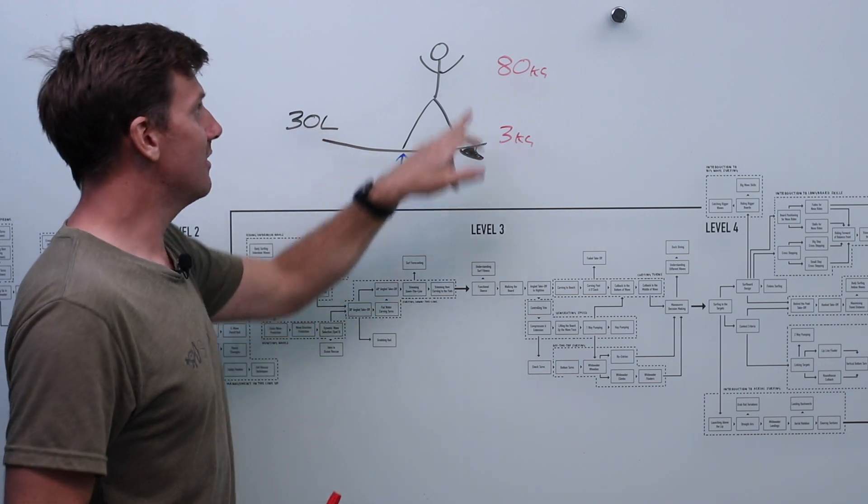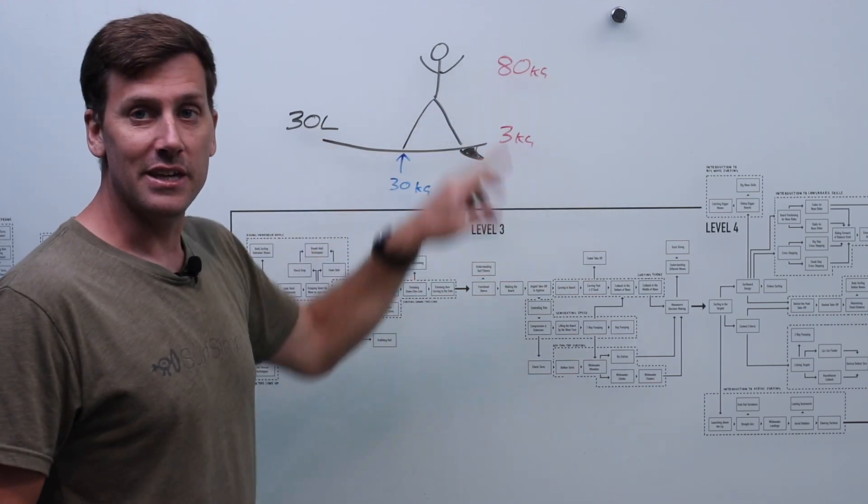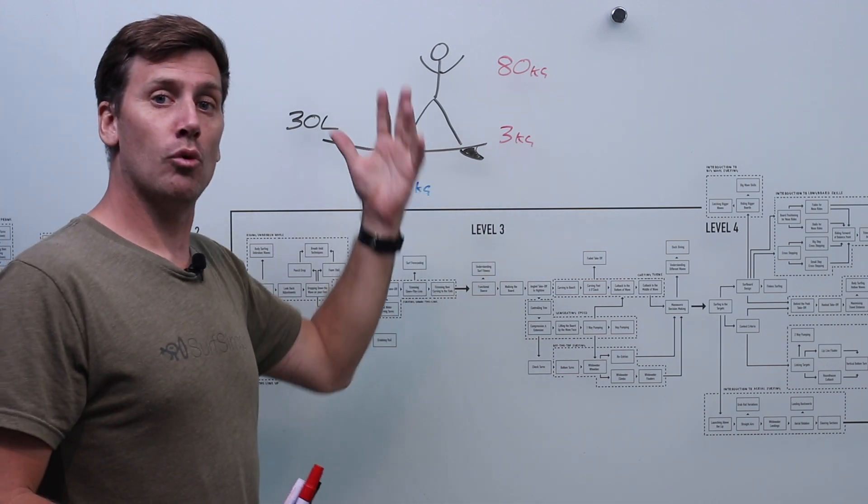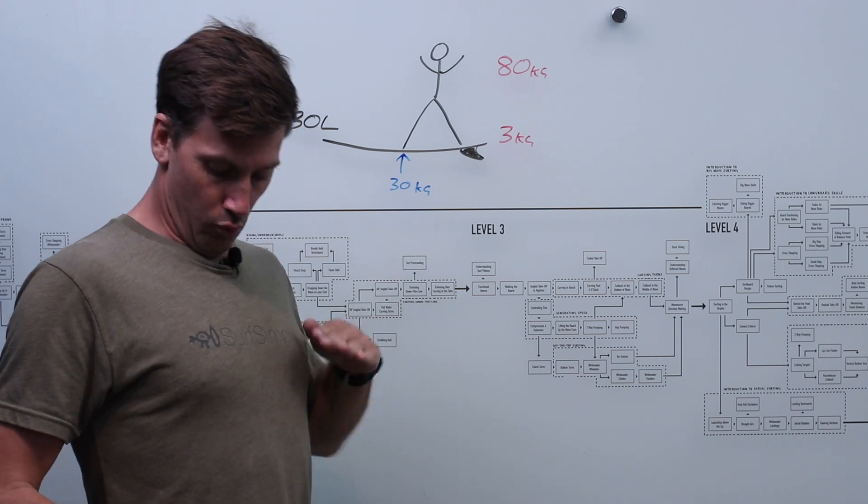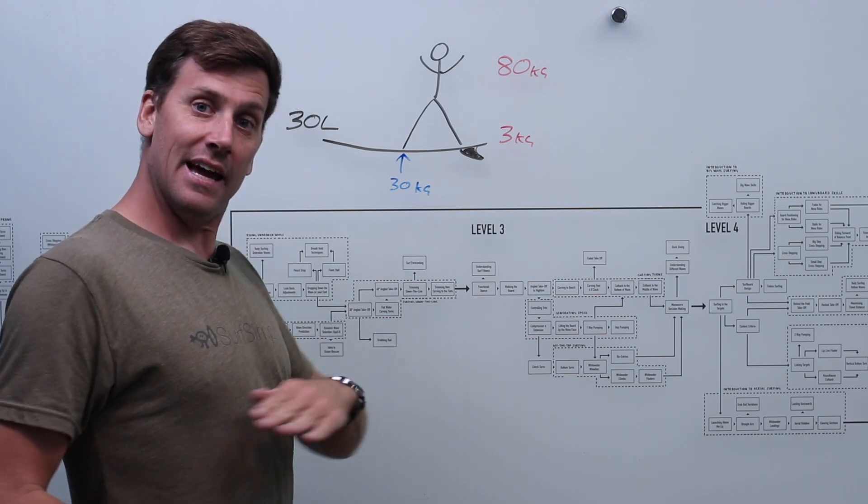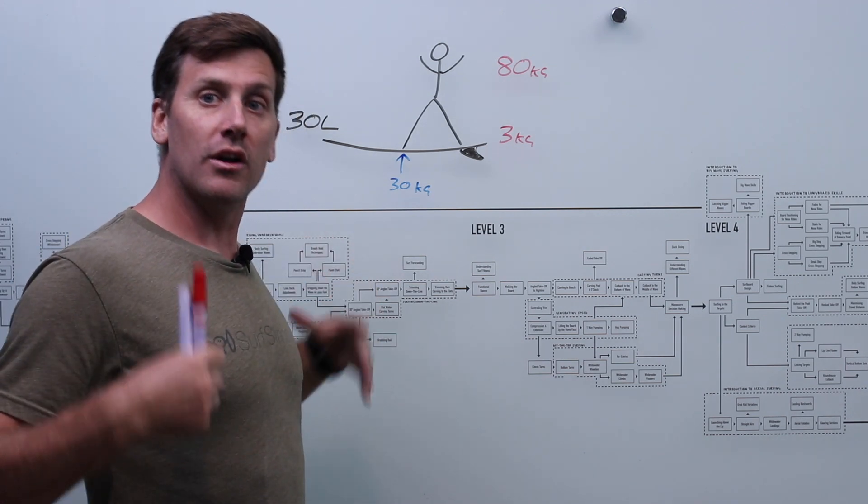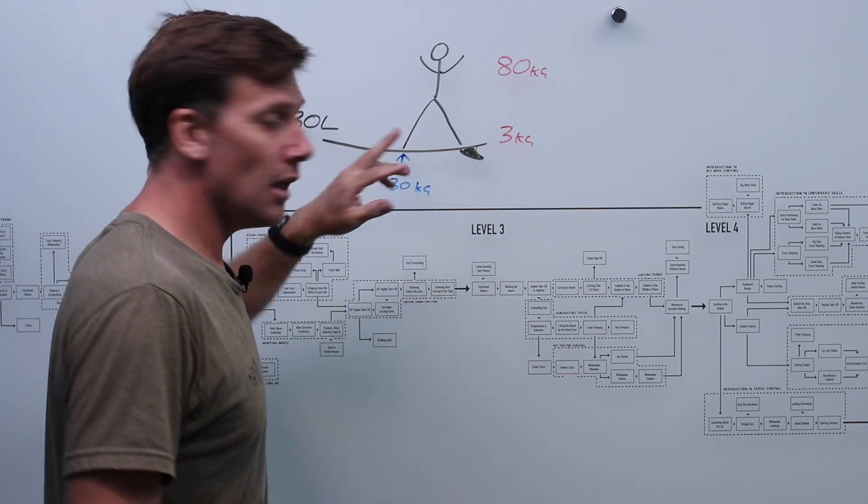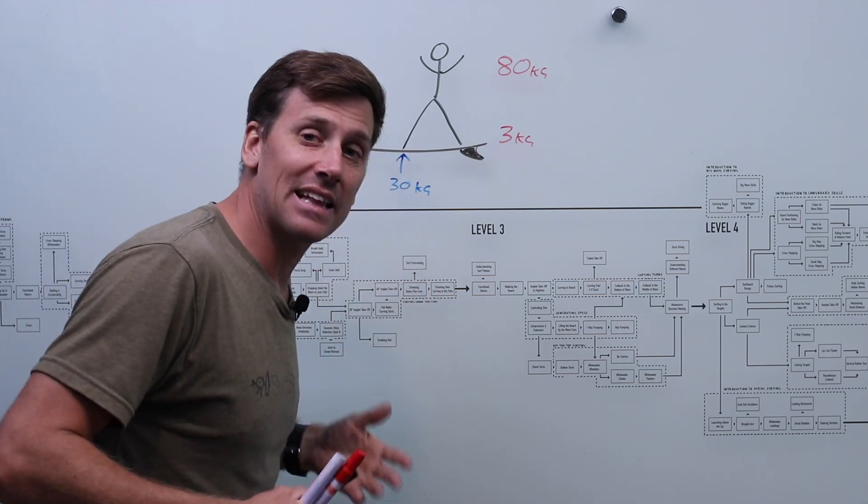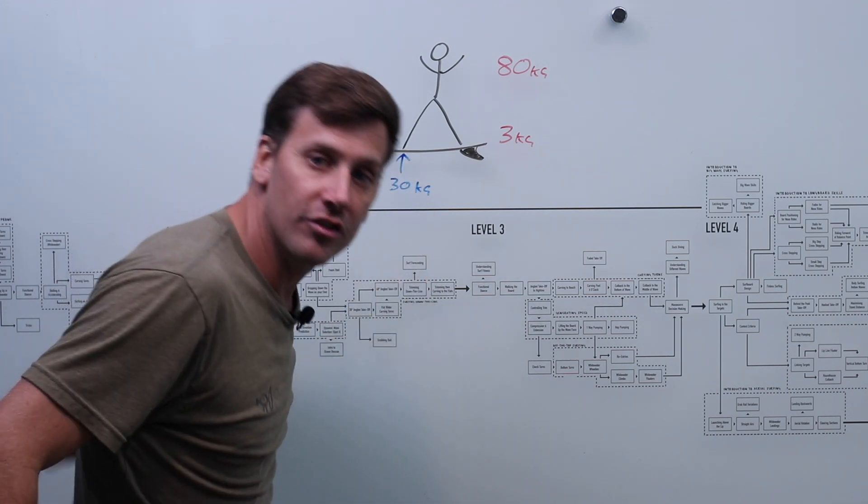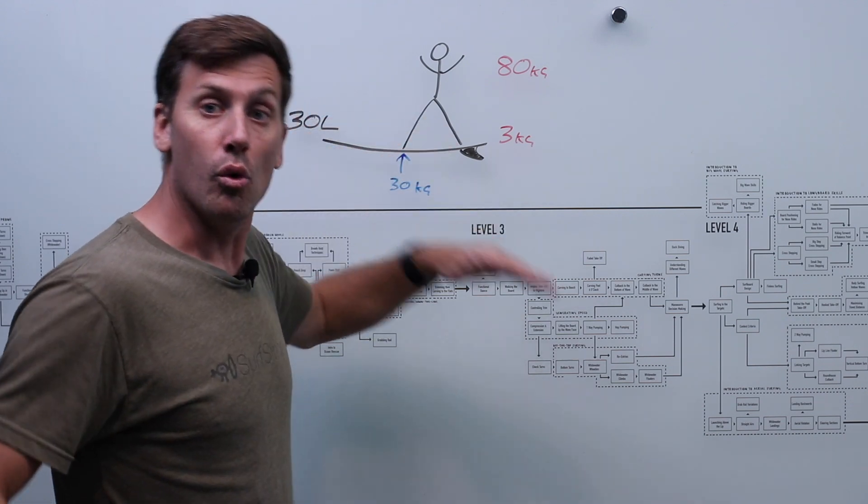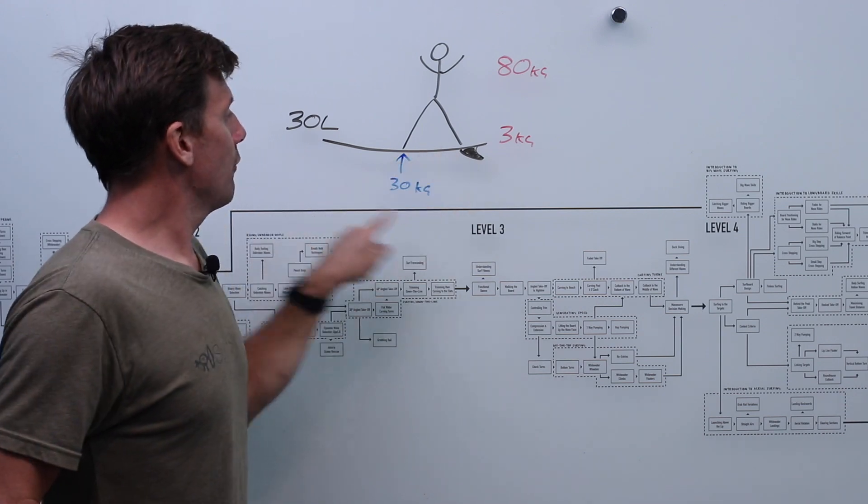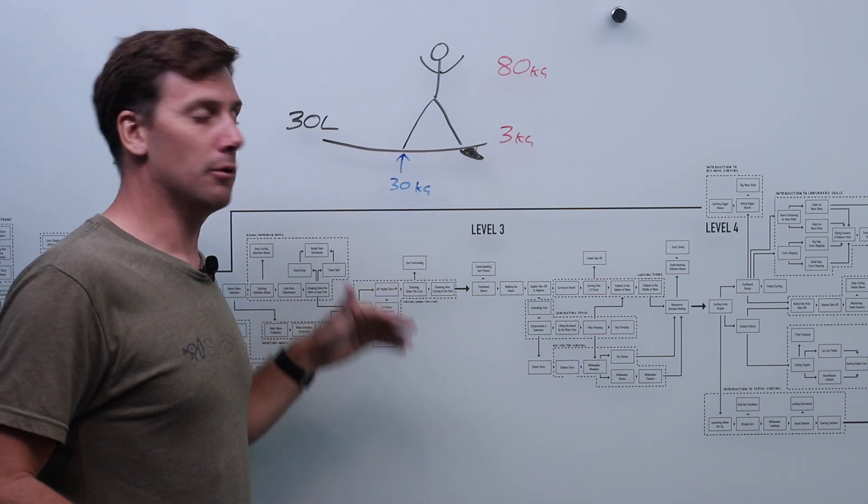Now, what that means is that of these 83 kilos, 30 kilos of it is going to be pushed up out of the water, which is why, you know, when you sit on a surfboard, the waterline's probably somewhere around here and your shoulders, head, chest, all of that is clear of the water. When we lie down and we're paddling, it's going to be my head, my shoulders, my back, maybe my bum out of the water as I'm paddling this 30 litre board. That's from this buoyancy that is available to us.